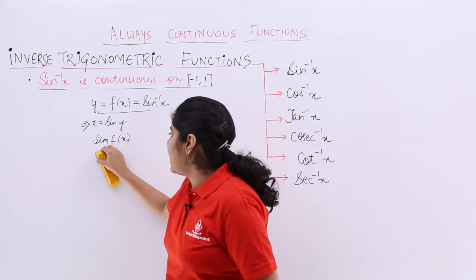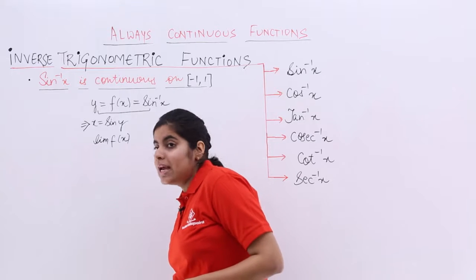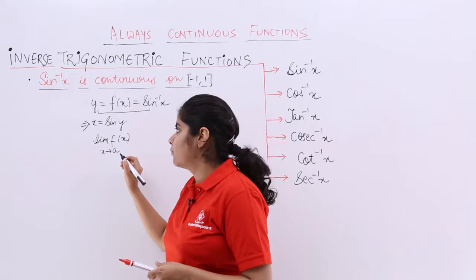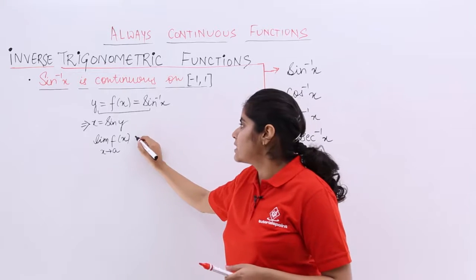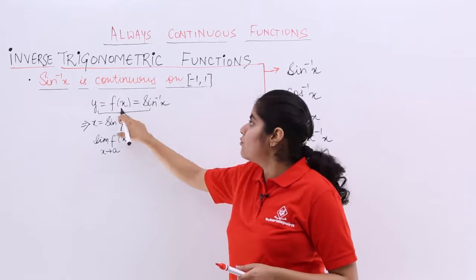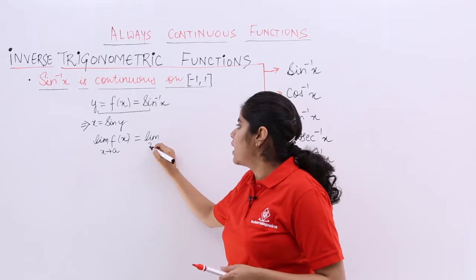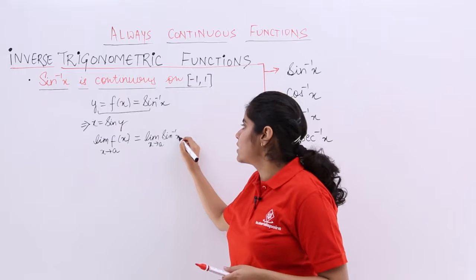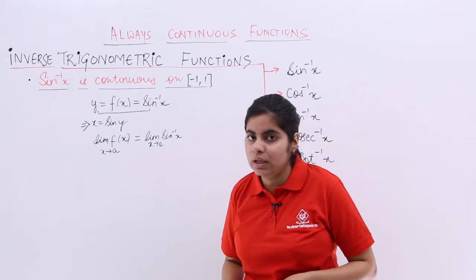It is actually equal to the value of the function that I need to prove. Limit f(x) at x tends to a. What is f(x)? f(x) is sine inverse x. So, it is limit x tends to a and here it is sine inverse x. This is the story.